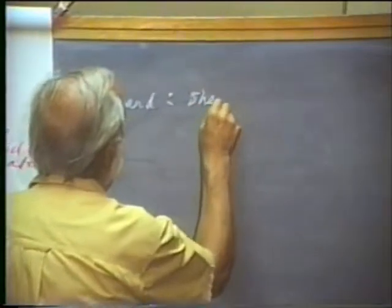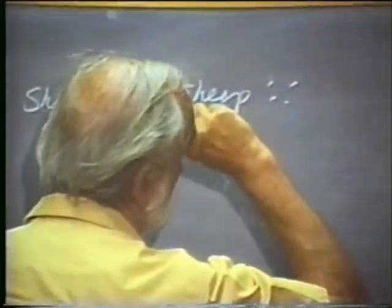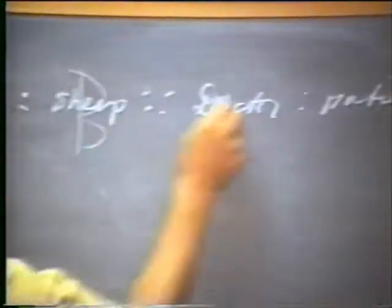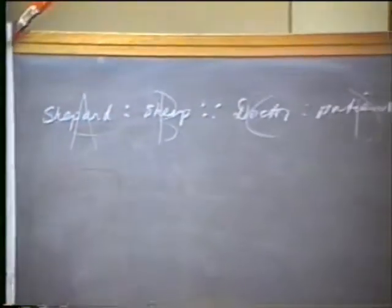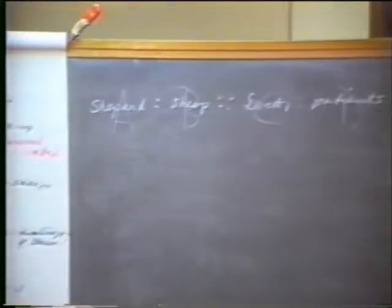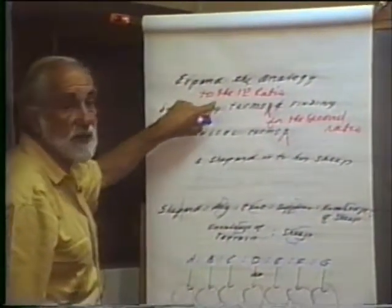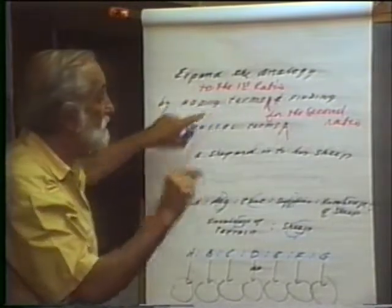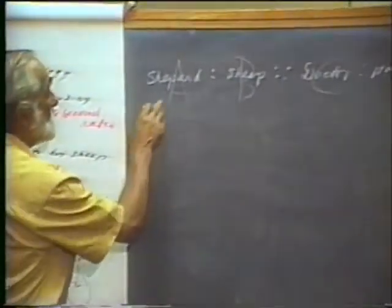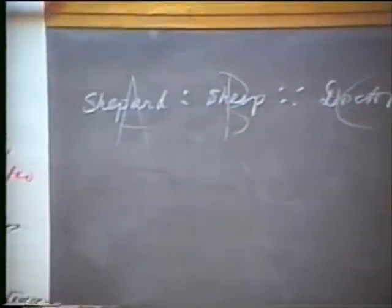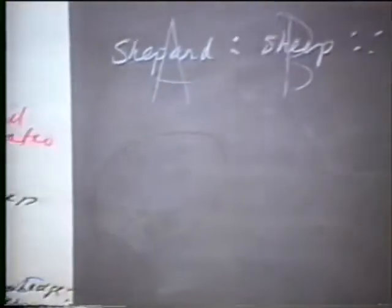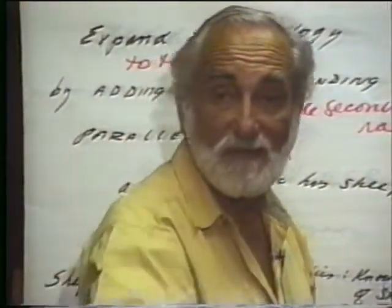Shepherd is to his sheep as — what should we use? A doctor is to his patients. A is to B as C is to D. What you must do to expand the analogy is add terms to the first ratio. As you think of the way a shepherd relates to his sheep, is it likely he may need something to help him? A dog. A shepherd is to his dog.